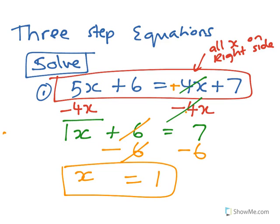You could also check this. 5 times 1 plus 6, does that equal 4 times 1 plus 7? 5 ones are 5 plus 6, 4 ones are 4 plus 7. Is that true? 5 plus 6 is 11, 4 plus 7 is 11, so yeah, it is indeed true.